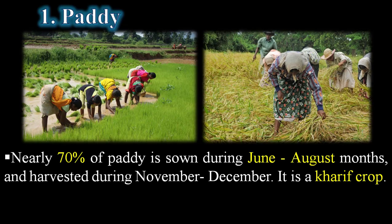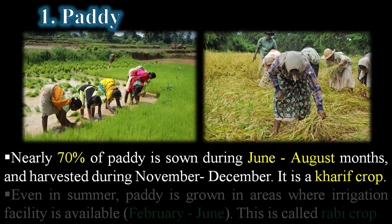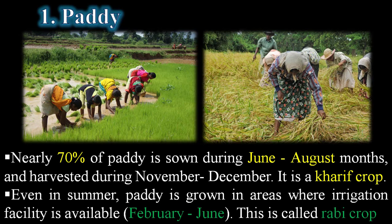Nearly 70 percent of paddy is sown during June to August and harvested in November and December — this is the kharif crop, meaning it is a rain-fed crop. Even in summer, paddy is grown in areas where irrigation is available, during February to June, and in that case it is called the rabi crop.